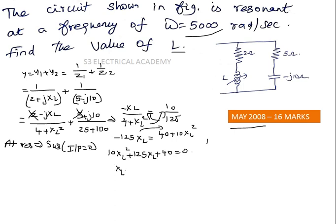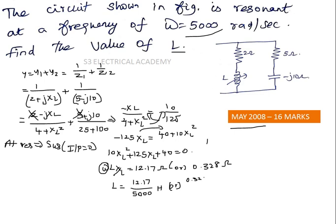Solving the quadratic equation with a calculator gives XL = 12.17 ohm or XL = 0.328 ohm. Since XL = ω·L and ω = 5000 rad/s, L = 12.17/5000 = 2.434 millihenry or L = 0.328/5000 = 0.0656 millihenry (approximately 66 microhenry). With this, we conclude the parallel resonance video having solved four previous Anna University 16-mark questions. Thank you.